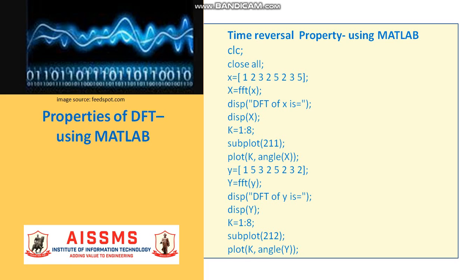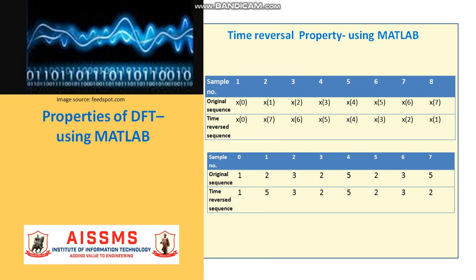X of minus N in our case is Y which is 1, 5, 3, 2, 5, 2, 3, 2. The DFT calculated using command FFT of Y is stored in capital Y. Then for K going from 1 to 8 for an 8 point DFT we will use subplot to plot this and then use the command plot K comma angle of this calculated DFT of Y. The process indicating time reversal of a periodic signal is as shown in the first table.